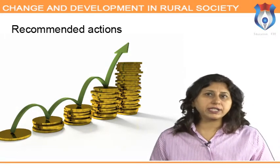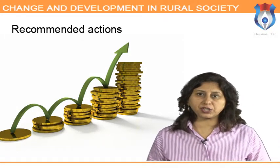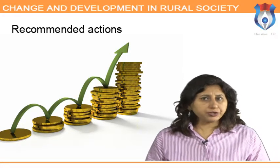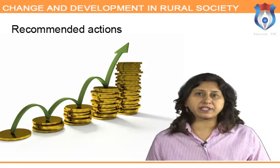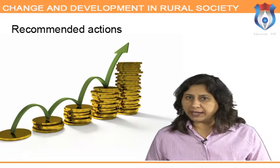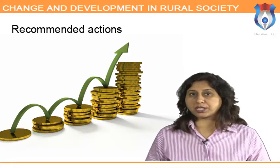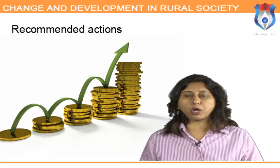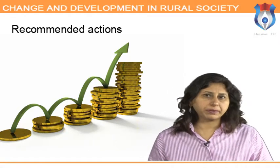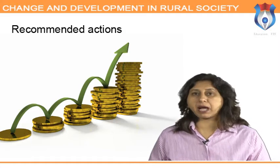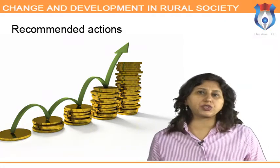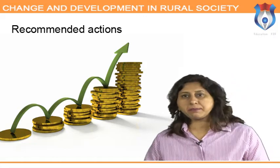Recommended actions: India should increase investments in rural infrastructure and agricultural R&D. India should reorient its social safety nets to create more employment in rural areas. Managing water use through institutional changes such as water rights based on farmer groups would help. India must liberalize its marketing and trade policies to encourage vertical coordination between farms, firms, and folks.